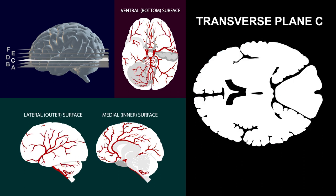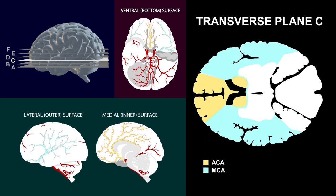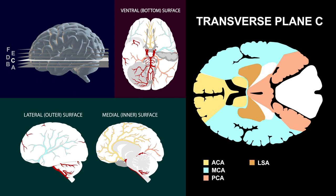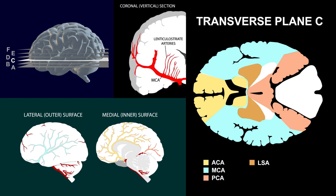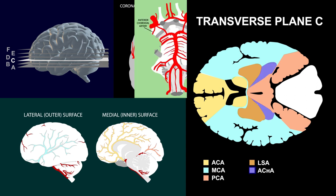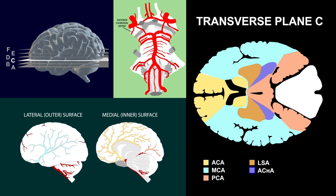In the next section, we again see the anterior, middle, and posterior cerebral arteries, but must also mention two additional arterial supplies. First, there are the lenticulostriate arteries, which arise from the middle cerebral arteries and supply the basal ganglia. Then there are the anterior choroidal arteries, which serve a number of structures including the hippocampus, amygdala, the crus cerebri, the substantia nigra, and others. The dorsal portions of the cerebellum are supplied by the superior cerebellar arteries.